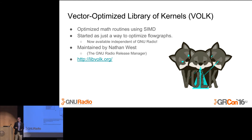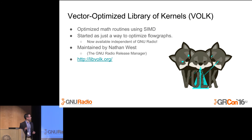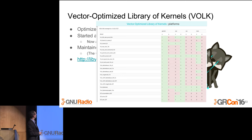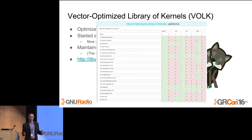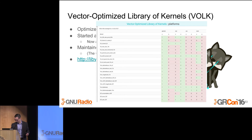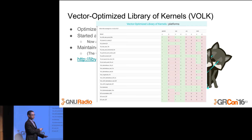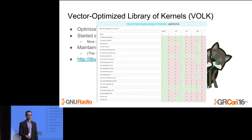The GRC is effectively a code generation tool — it generates code that connects all the graphs together for you. You don't have to use it; you could write the code yourself. Another tool we have is Volk — the Vector Optimized Library of Kernels. This is a library of math routines optimized with SIMD. If you're using an Intel or AMD processor, you almost certainly have an Instruction Set Architecture that supports SIMD operations.